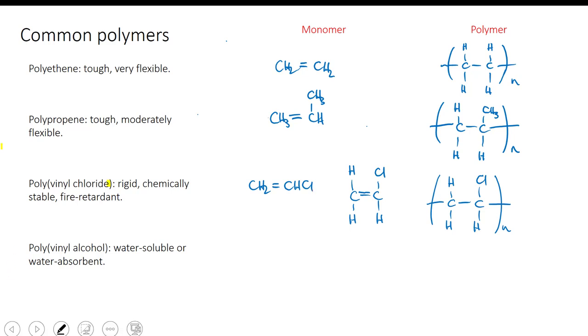Notice that because the old name for the monomer has two words, we put it in brackets in the polymer name. Polymers made from monomers with single word names, like ethene, don't need brackets.